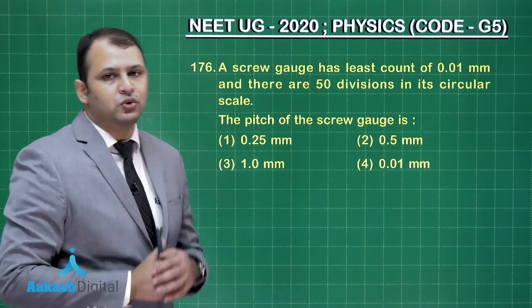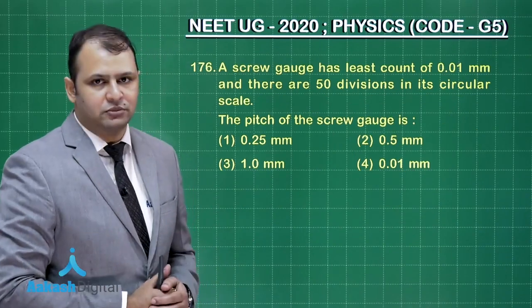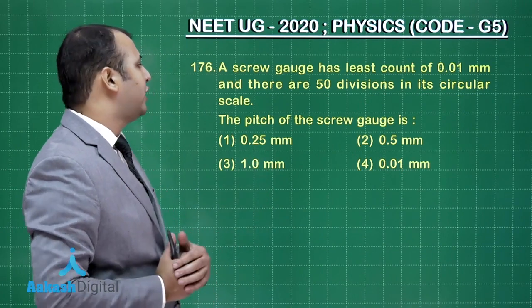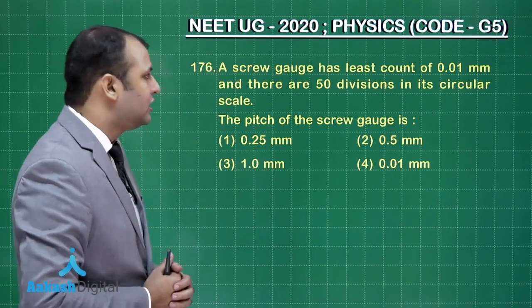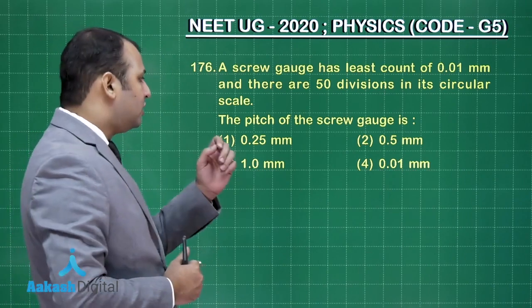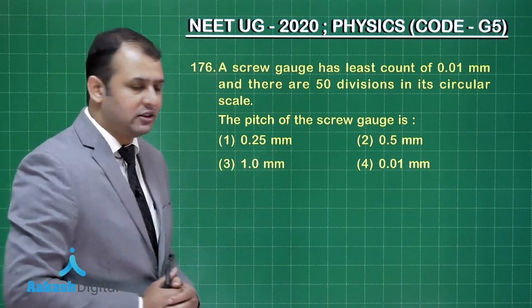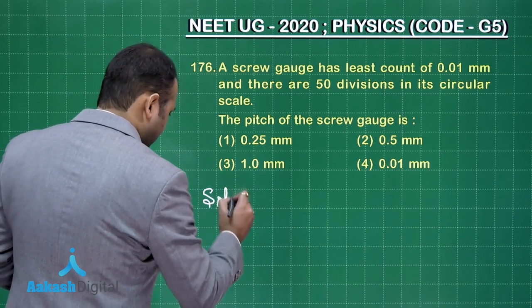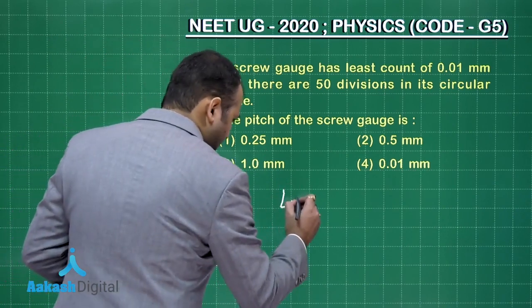Now this question belongs to the chapter units and measurements. Here a screw gauge has least count of 0.01 mm and there are 50 divisions in its circular scale. The pitch of the screw gauge is?